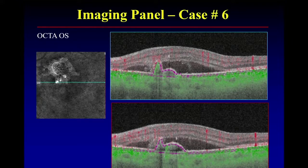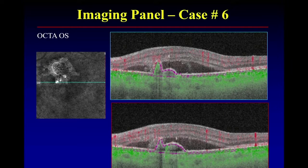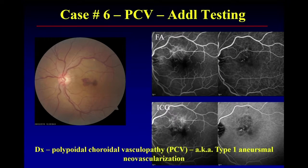Sung, is the OCTA helpful? Yes, greatly helpful. I see a hyperflow signal as a dot corresponding to the PED area. I think this is polypoidal. With these two images — the OCT and OCTA — do we all have to be doing ICG, or have we confirmed the diagnosis? No, I think this is diagnostic. And there is the fluorescein on top and the ICG on the bottom showing the polyps very nicely.